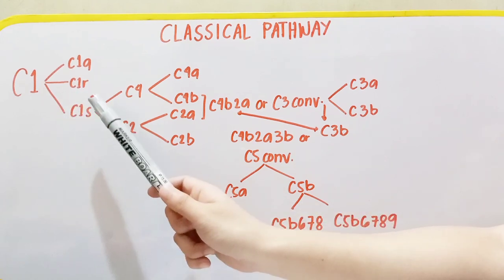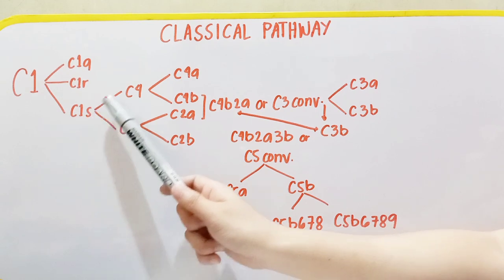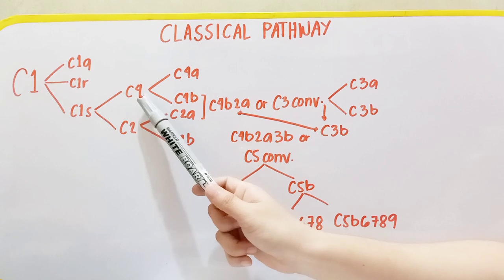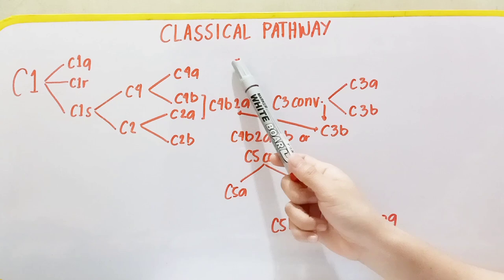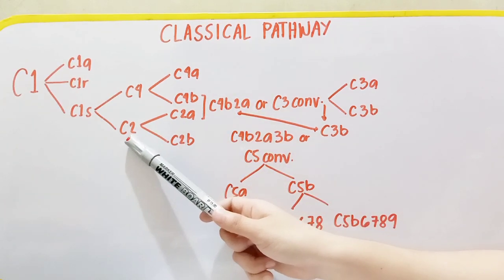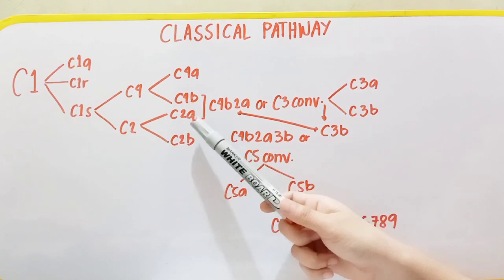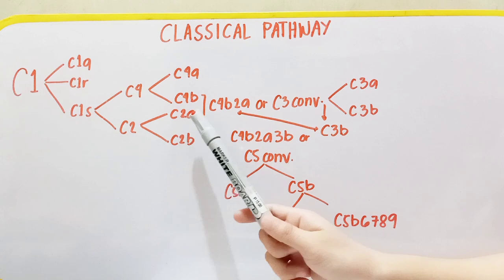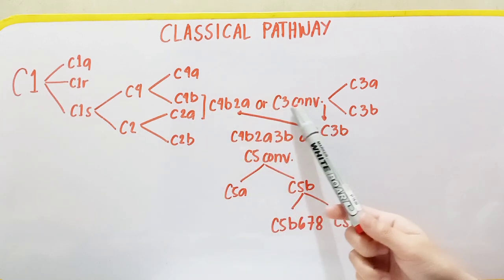C1S is the last one to be activated, and it splits into C4 and C2. The C4 splits into C4A and C4B — C4A is an anaphylatoxin. The C2 splits into C2A and C2B, where C2A is the major fragment. When C4B and C2A are combined, they form C4B2A, which is called the C3 convertase.